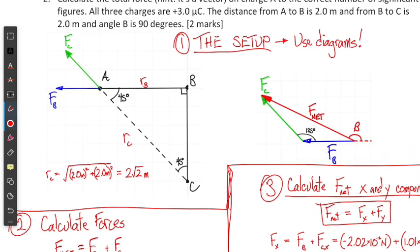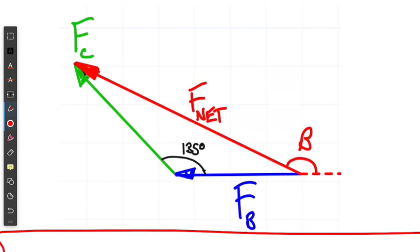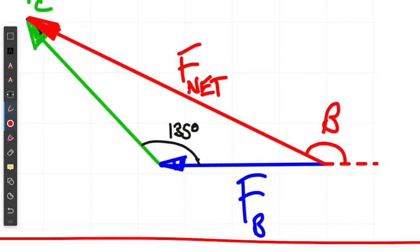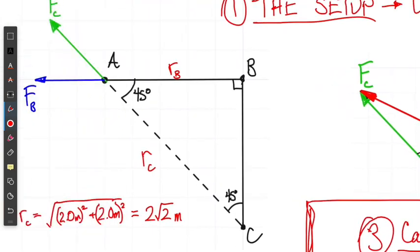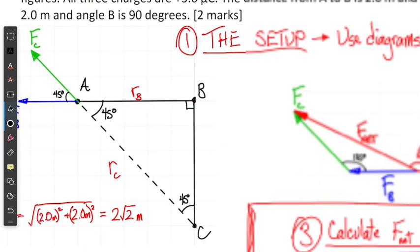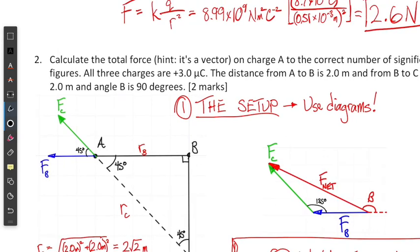After drawing a diagram of our system, it's also a good idea to draw a diagram of our resultant vector. Our resultant vector is given by force net, and I'm going tip to tail — I place vector C at the tip of vector B, then draw the resultant from tail to tip. I've also shown this angle here for vector C as 135 degrees, which I got by adding 45 degrees to 90 degrees. We'll need that angle later.